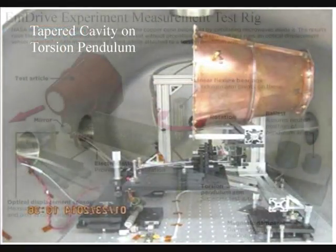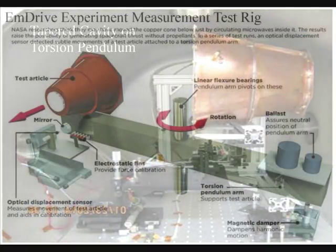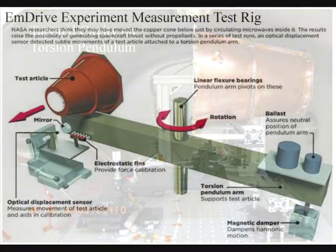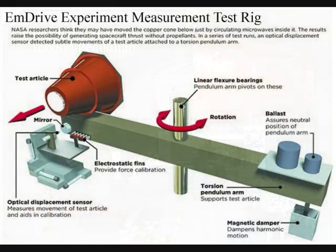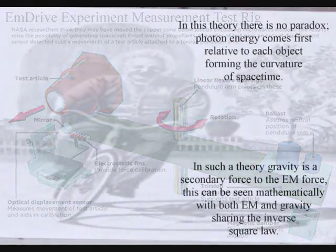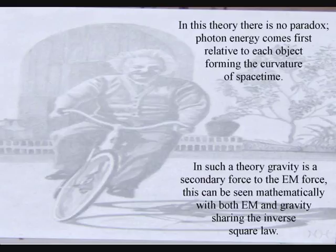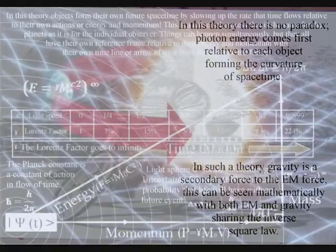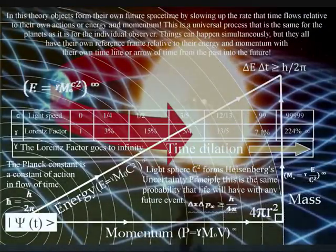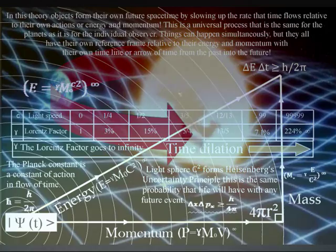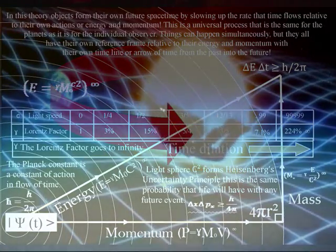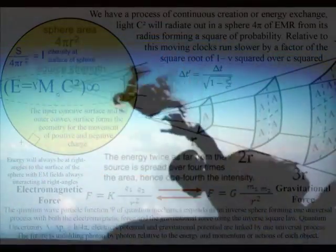The movement of an object through space over a period of time, relative to its mass, and therefore its energy. In this theory there is no paradox — photon energy comes first, relative to each object, forming the curvature of space-time. In such a theory, gravity is a secondary force to the electromagnetic force. This can be seen mathematically, with both electromagnetism and gravity sharing the inverse square law.